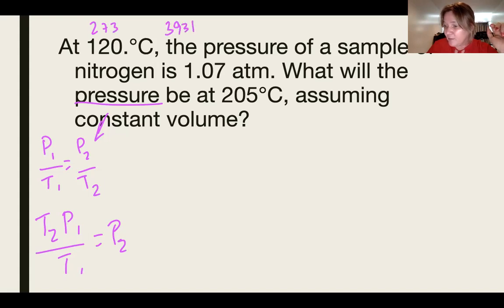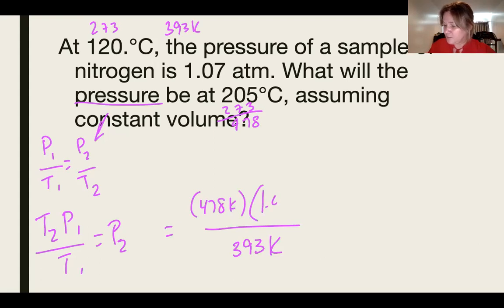I got to change my 120 and my 205 to K. So that's plus 273. That's 393 K for T1. And then 205 plus 273, that's 478. So that's 478. And P1 is 1.07 atm. With my calculator, 478 times 1.07 divided by 393. 1.30142494. 1.3.